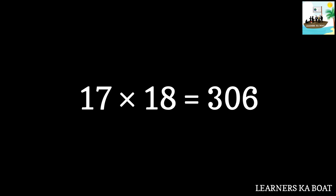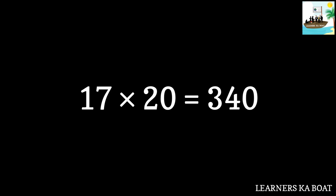17 eighteens are 306. 17 nineteens are 323. 17 twenties are 340.